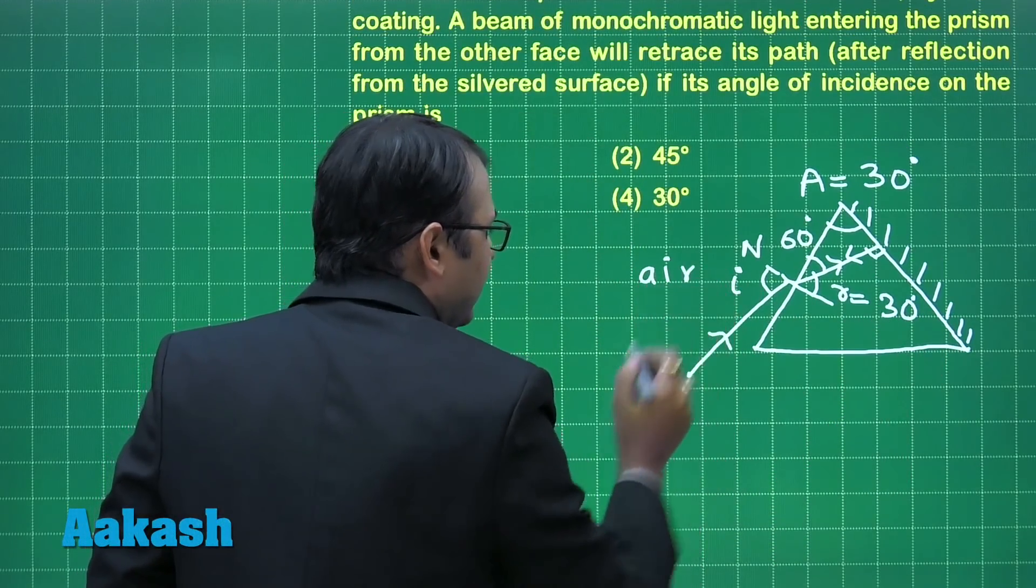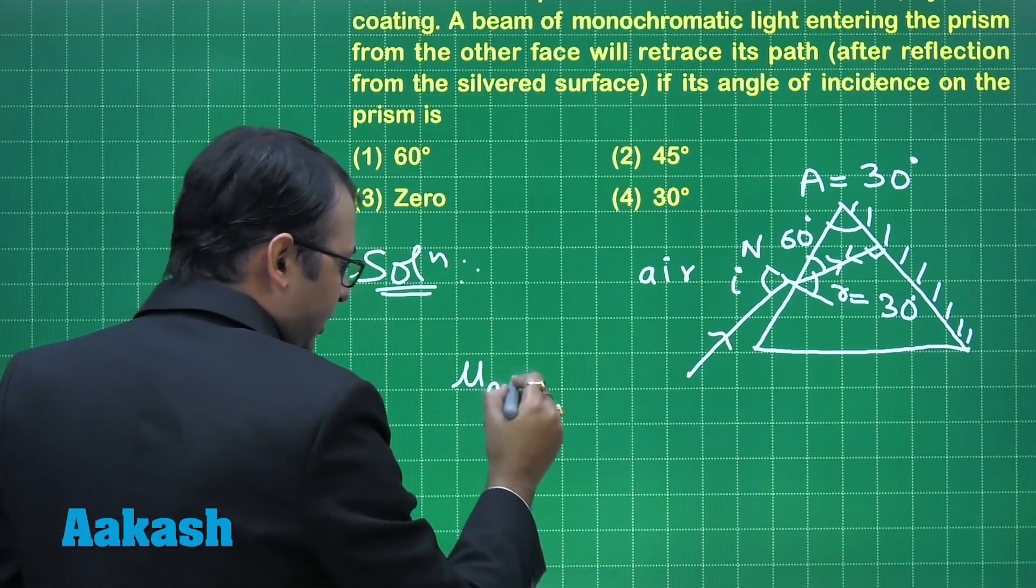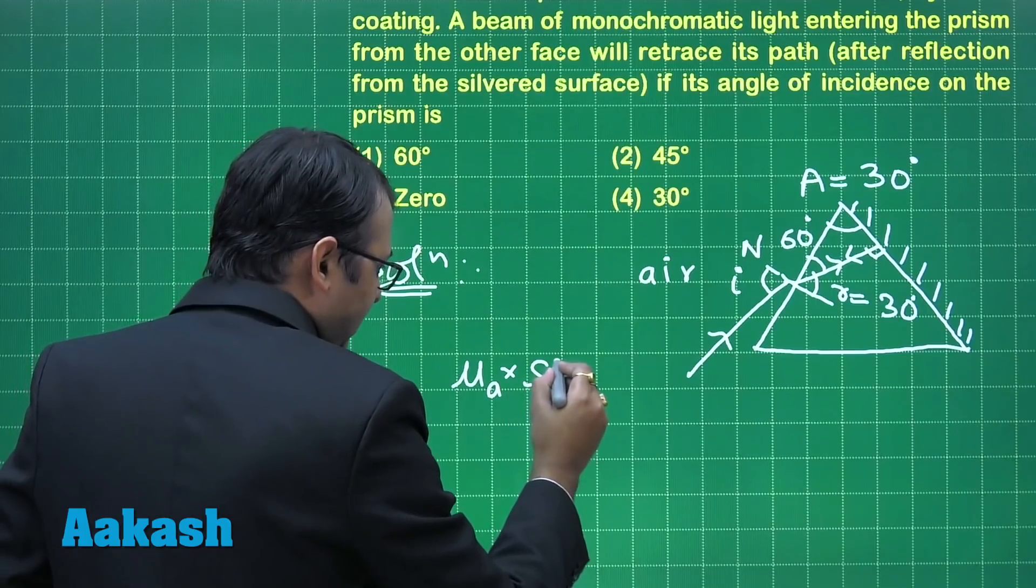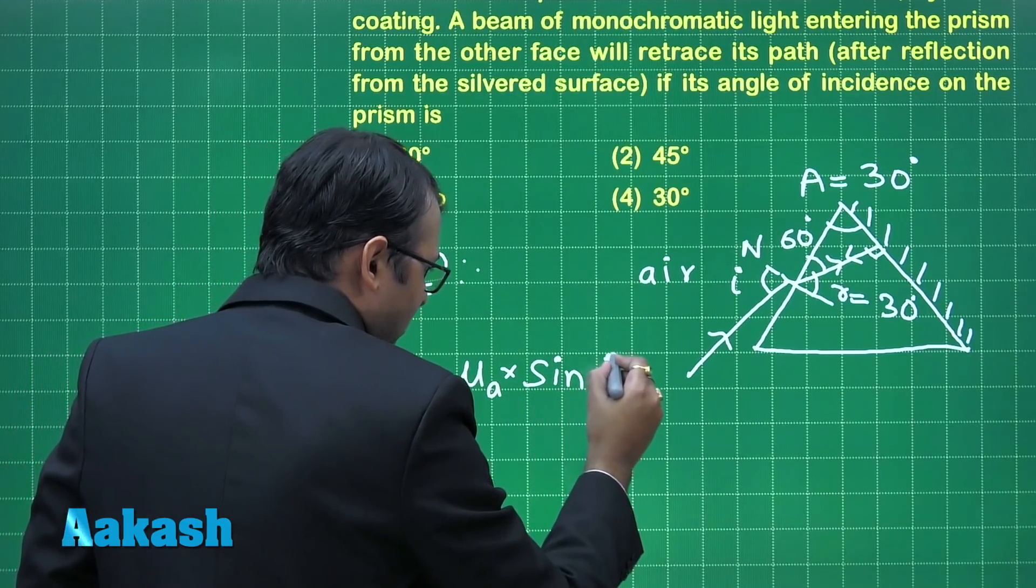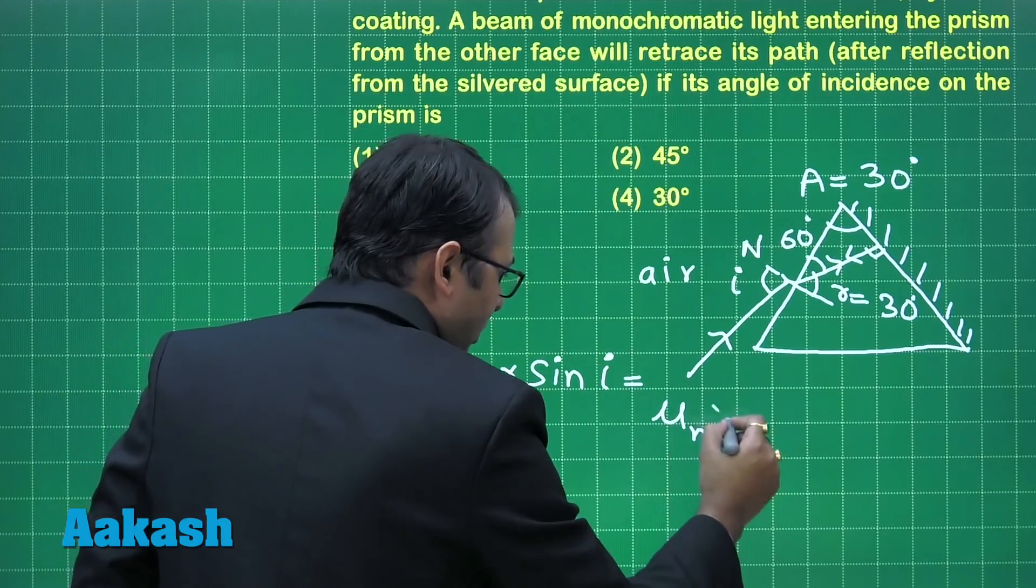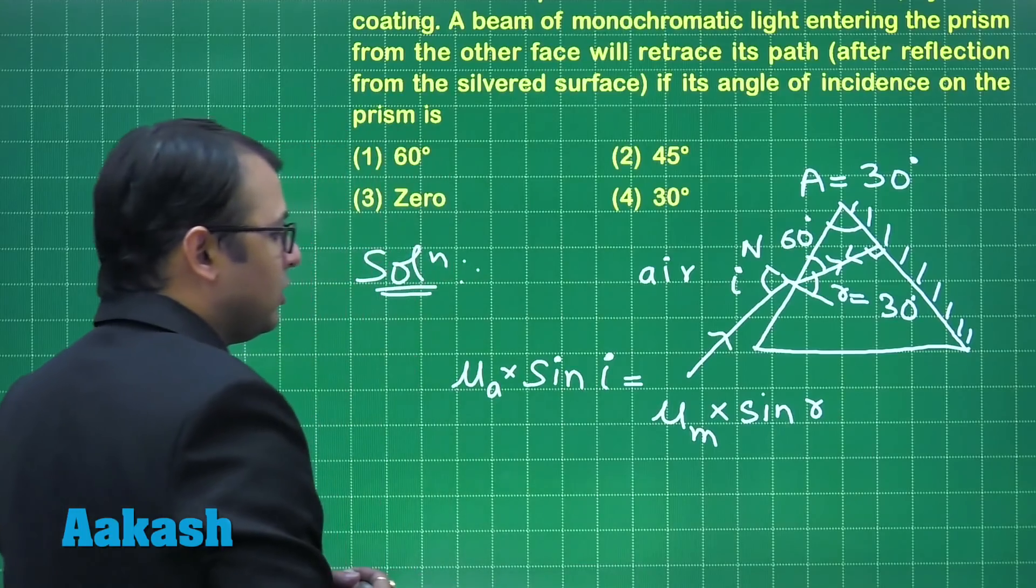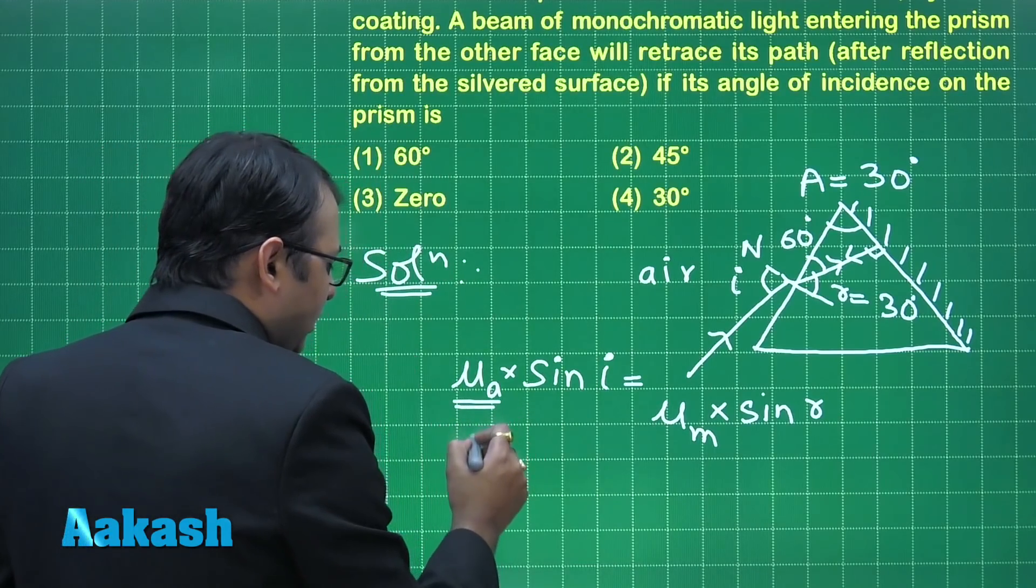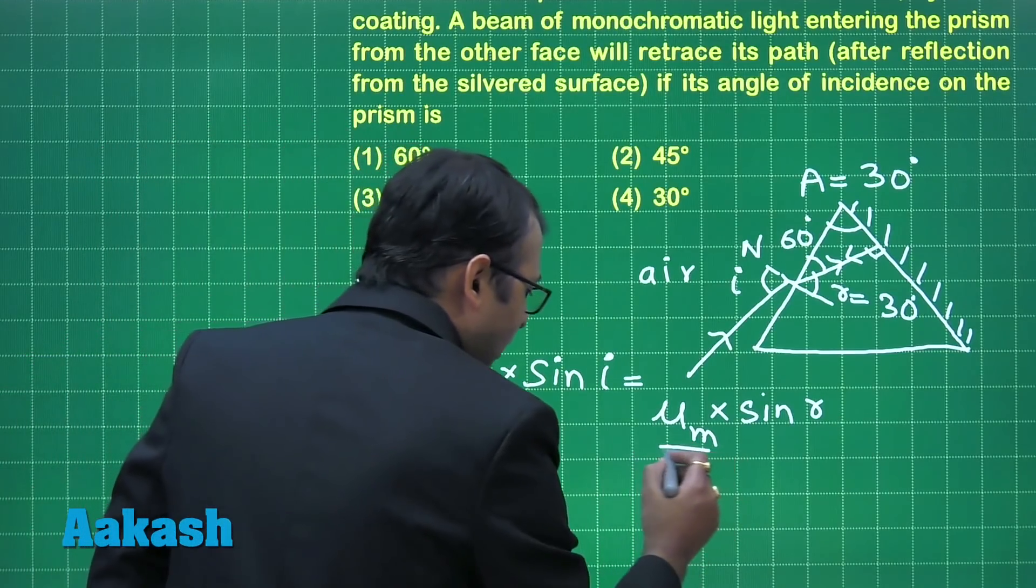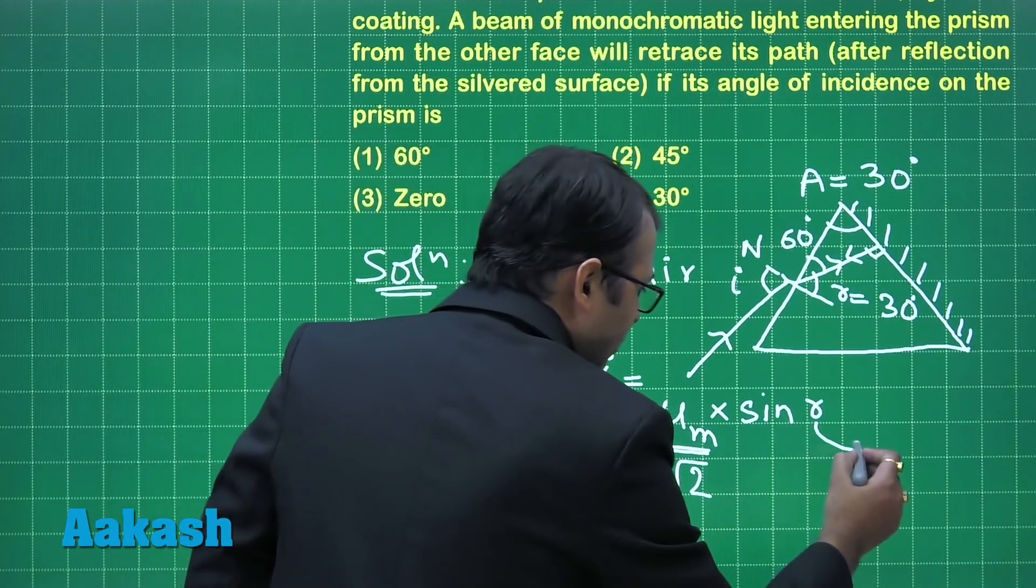Outside what is there? Air. So according to Snell's law, mu a into sine i should be equal to mu m into sine r. Mu a value is 1, mu m value given is root 2. We know r value is 30 degrees.